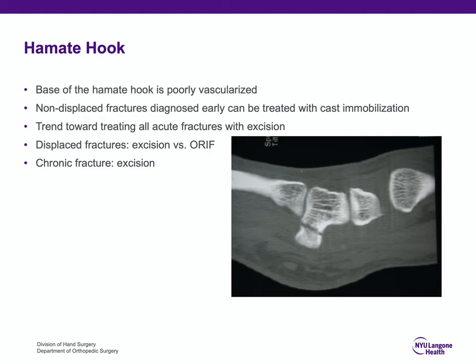The hamate hook, similar to other carpal bones, is poorly vascularized. Cast immobilization, if initiated immediately after injury, could potentially allow the fracture to heal.